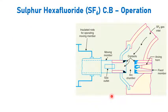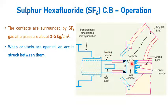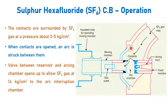Let us see the operation of the SF6 circuit breaker. During a no-fault condition, both contacts are in the closed position and are surrounded by SF6 gas at a pressure of 3 to 5 kg per centimeter square. When contacts are opened and an arc is struck between the fixed and moving contacts, a valve between the arcing chamber opens and SF6 gas at 14 kg per centimeter square enters into the arcing chamber.